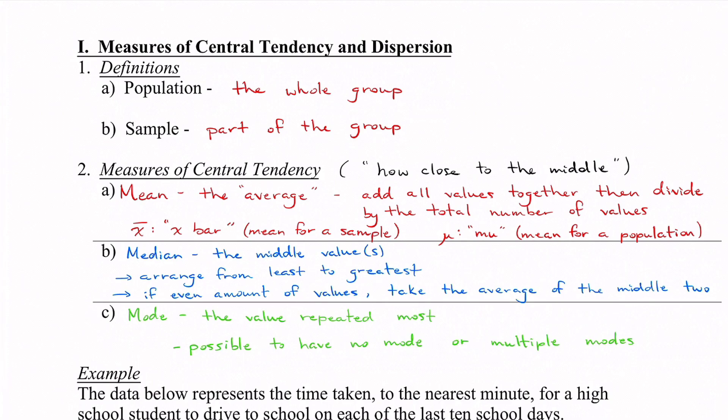Point number two is measures of central tendency. The word central tendency means how close to the middle you're going to be — central means center. There are going to be three different things under that. Mean is going to be our average. You've probably heard of the mean before, and to calculate it you add all the values together and then divide by the total number of values.